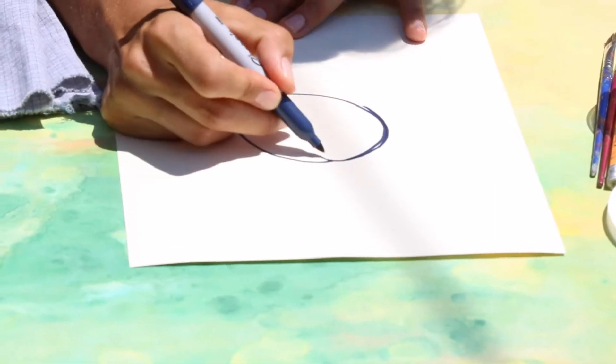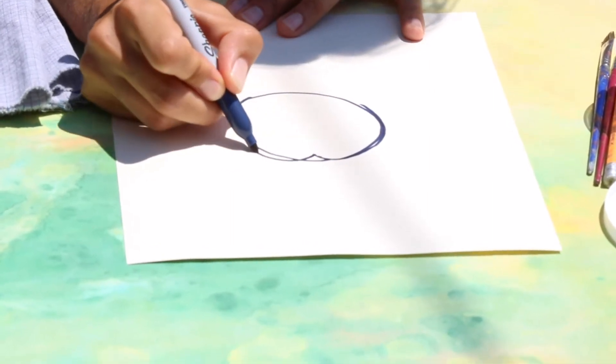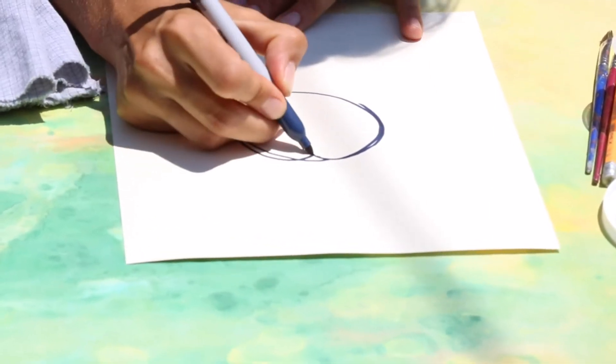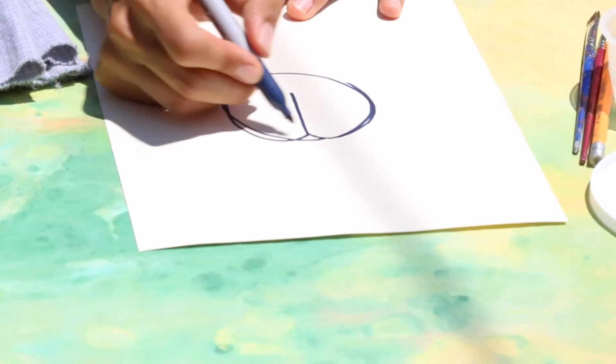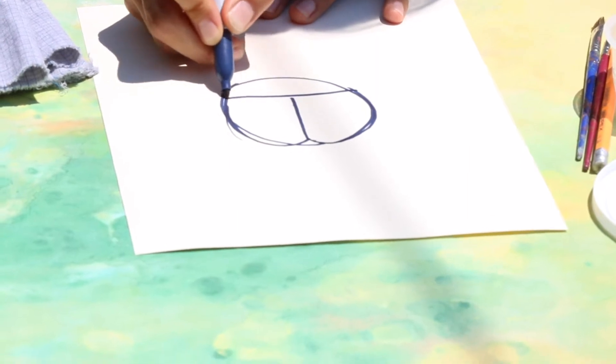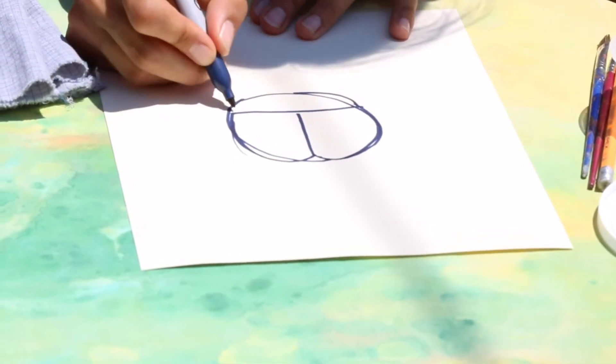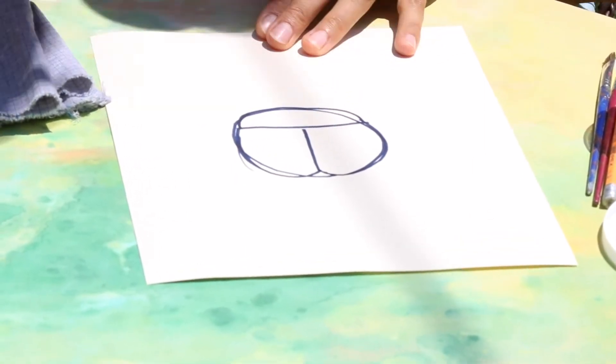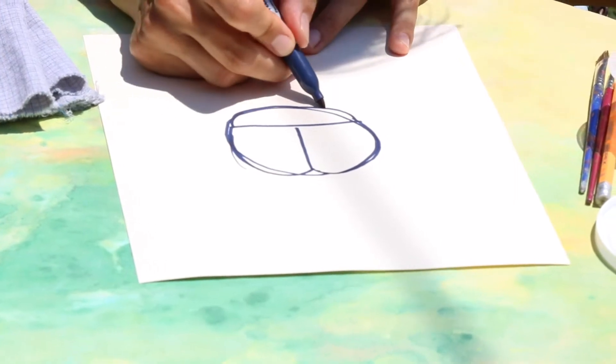To make your ladybug shape, you add a little heart shape on the bottom and going around the sides. Then this is the middle part of the body and then we'll add the head.